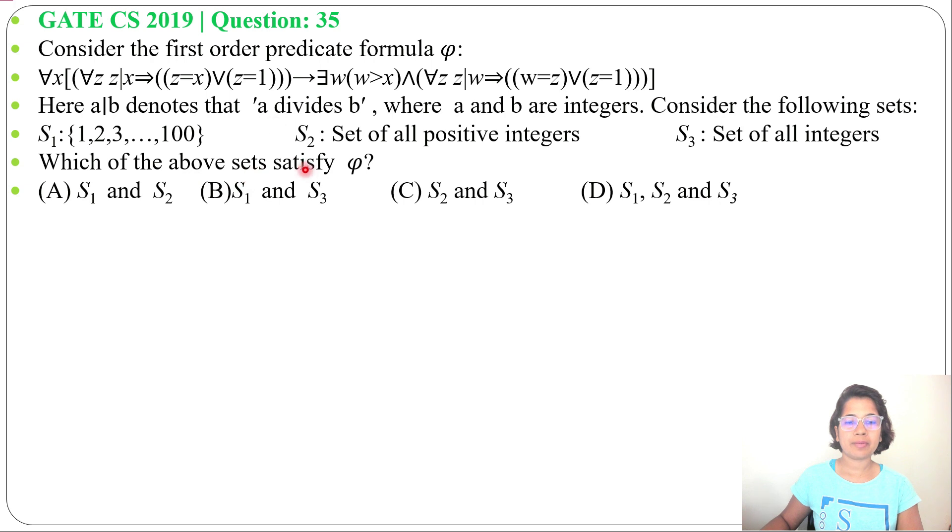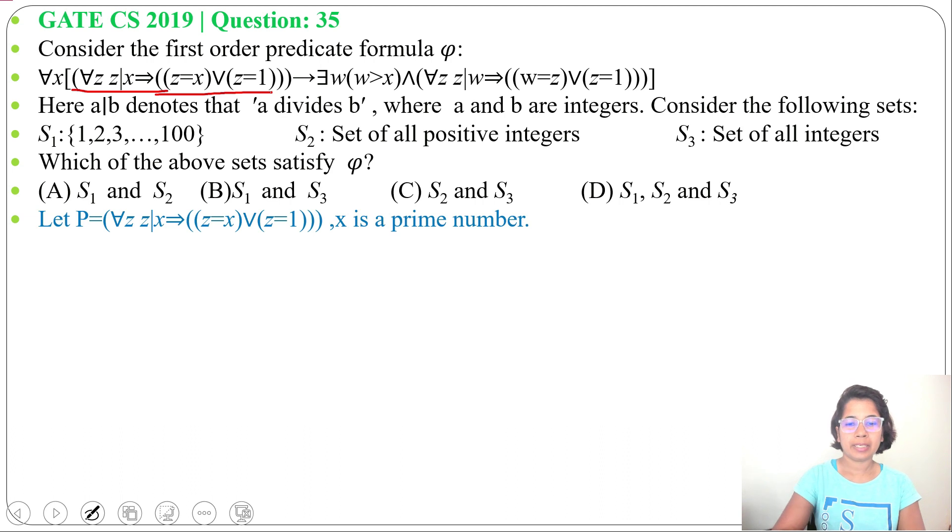Which of the above sets satisfy φ and four options are given. So let me divide it into three parts. First, for all z, z divides x, z equals x or z equals 1. Let it be P. It means x is a prime number.